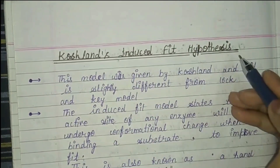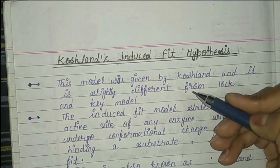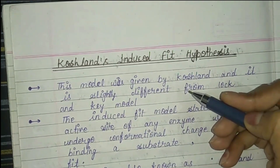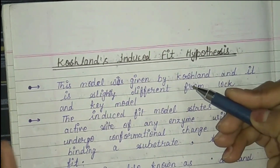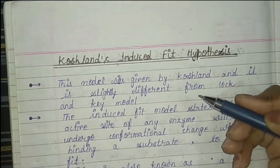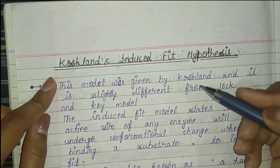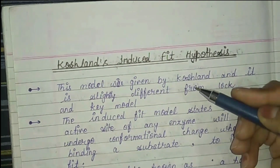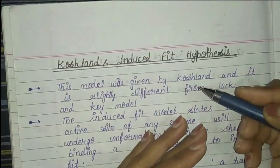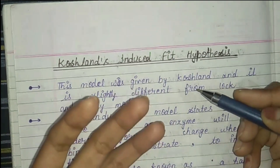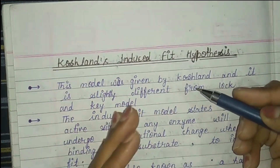Koshland's induced fit hypothesis — what is the change? Fisher said the active site is rigid, but in Koshland's induced fit hypothesis the active site is flexible. This is also known as the hand-in-a-glove model. Just as when you wear a glove, your hand adjusts to the glove and the glove changes shape to fit the hand.